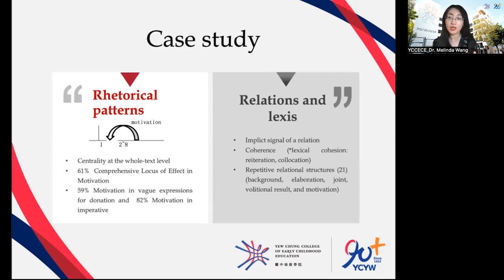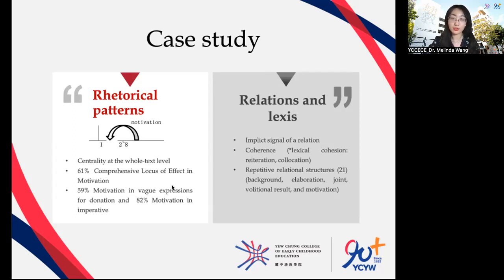Among all 36 texts, only 21 types of relations appeared. Finally, the common chain of relations indicates that fundraising text is often organized through elaboration, joint, motivation, relational result, and background.